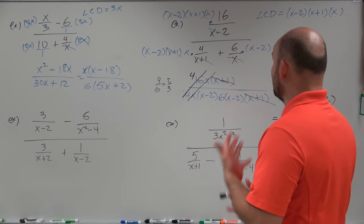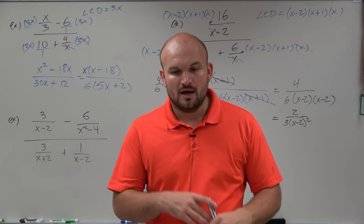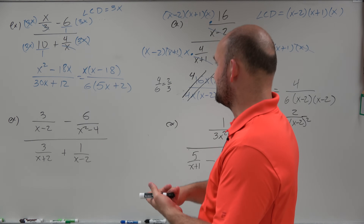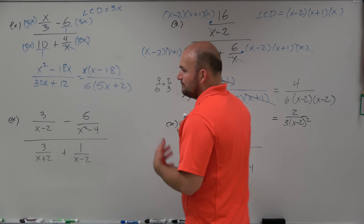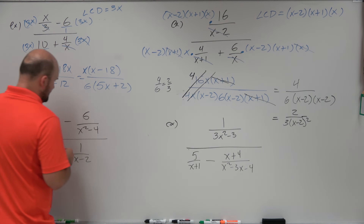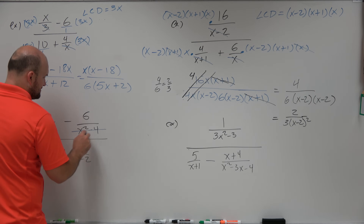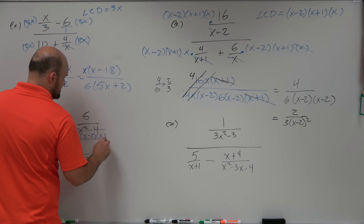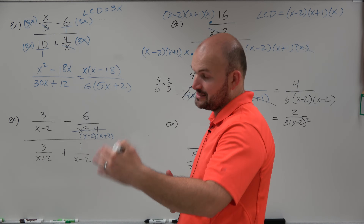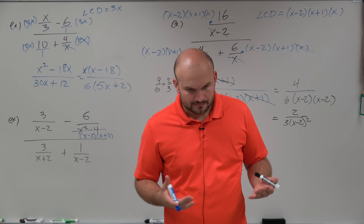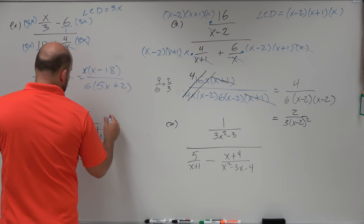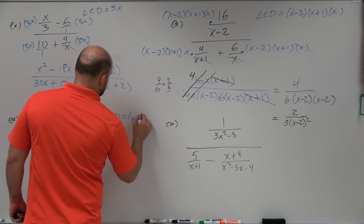In the next example, we need to apply some factoring. Whenever you're looking at expressions, always factor before identifying the LCD. Here, I notice the denominator 3(x squared minus 1) factors as 3(x minus 1)(x plus 1). We also have (x plus 1) as a denominator, and x squared minus 4 factors as (x minus 2)(x plus 2). Since we're just repeating factors — like how the LCD of 5, 6, 5, 6 is still 30 — the LCD here is simply (x minus 2) times (x plus 2). We want to leave it in factored form to apply the division property.